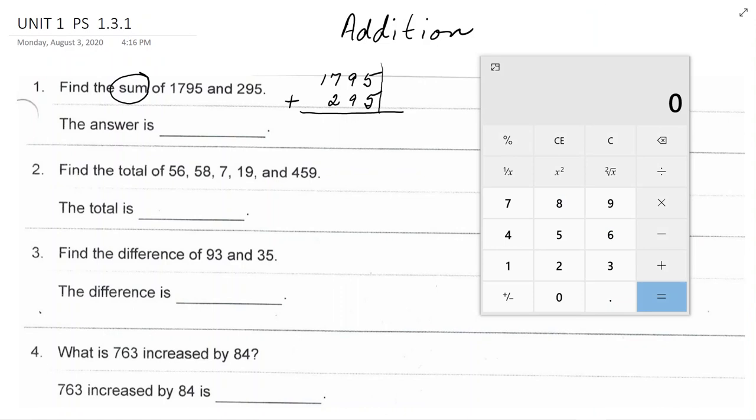All right, so here is our on-screen calculator and I'm simply going to type in, I make sure it's cleared off. I have a zero here and I type in 1,795. I hit the plus key because I'm doing a sum. I'm doing addition. 295. This calculator has an equal sign. Some calculators have the word enter.